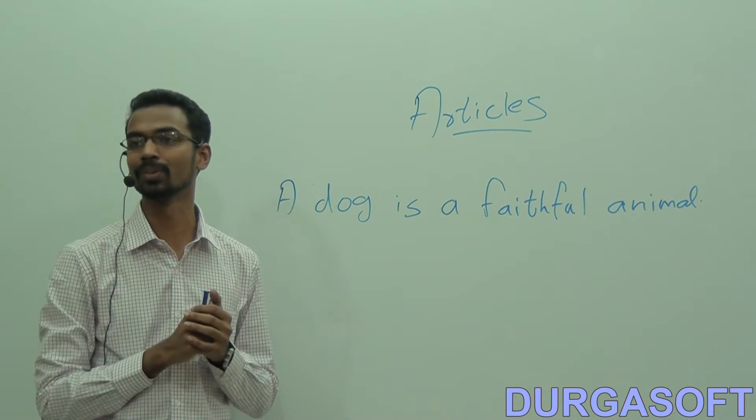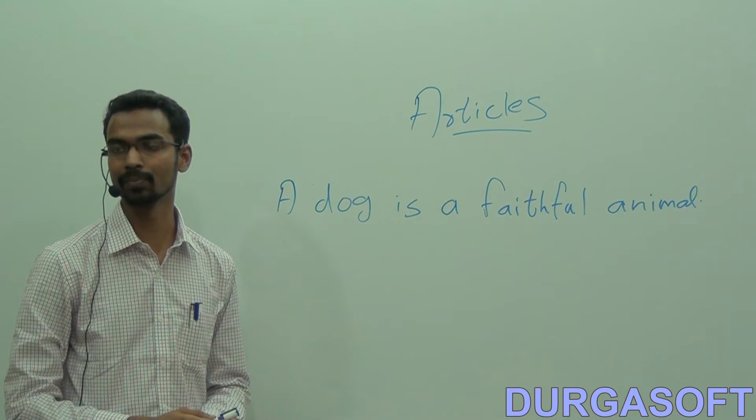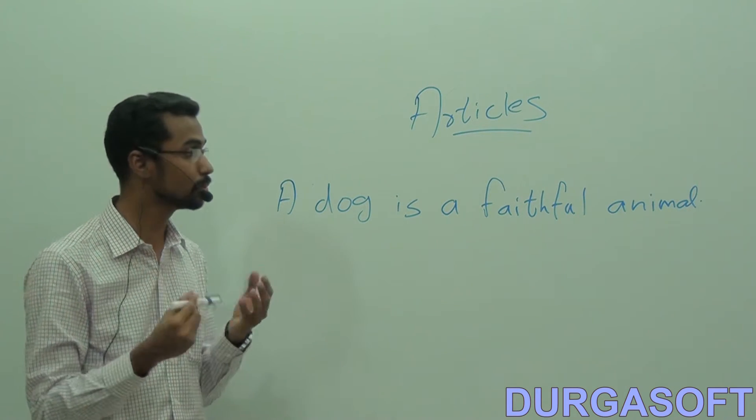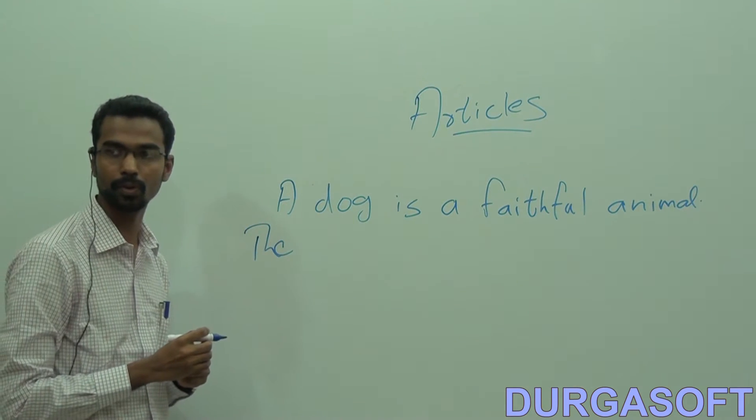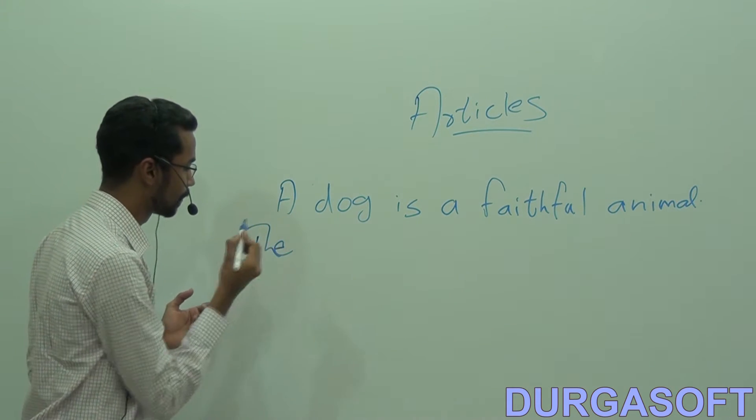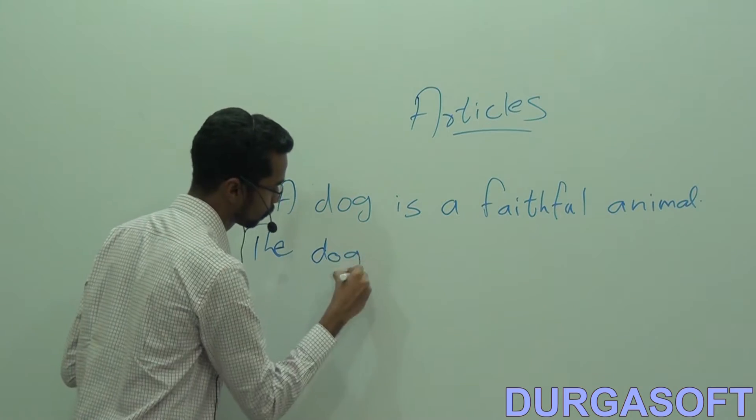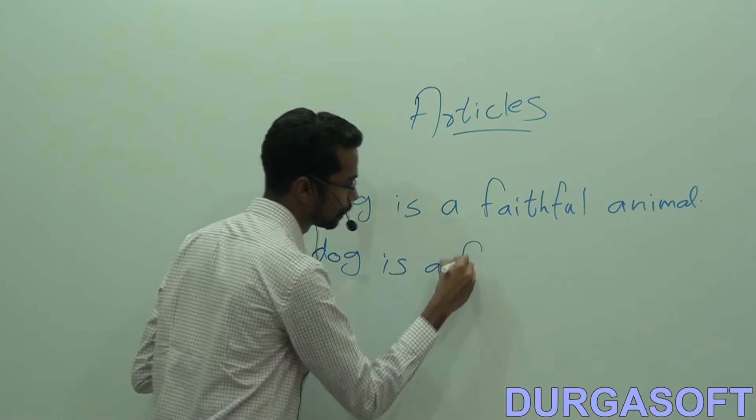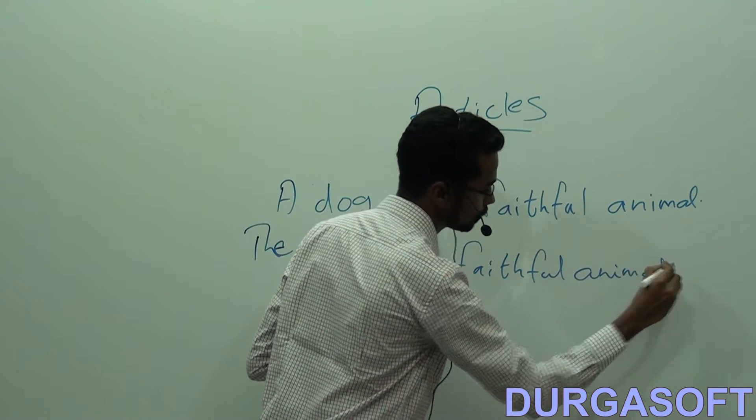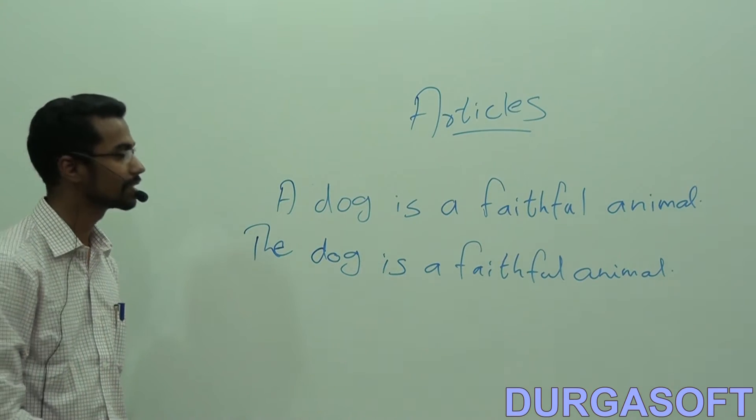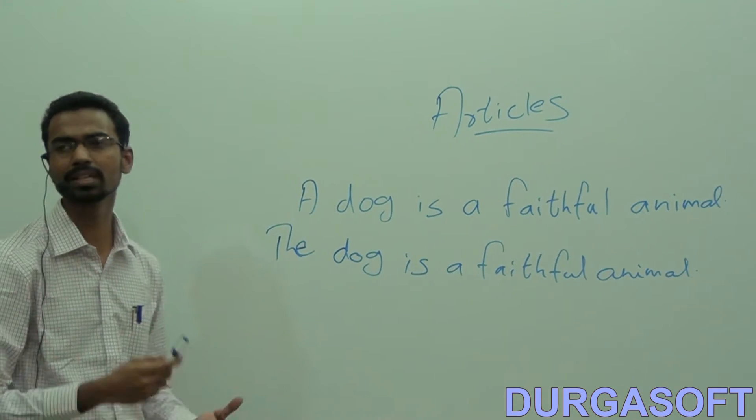Now, this dog is a representative. So, pointing at the dog, I would say a dog is a faithful animal. So the same thing you can do using the article 'the' also. Please listen. The same thing you can do using the article 'the'. When I say the dog is a faithful animal, it has the same meaning as the first sentence.